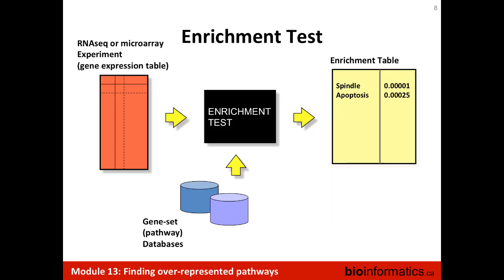This is a common scenario or an overview of your workflow. You can have a microarray or an RNA-seq experiment or any other omics experiment, which essentially is a gene expression table where genes go from top to bottom with their particular values. Then there's a black box called the enrichment test, which spits out a list of pathways that have a significant p-value associated to a gene list. That black box also takes gene set or pathway databases as its input.